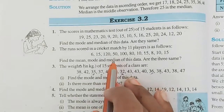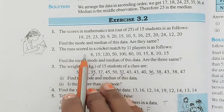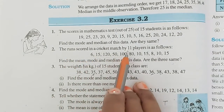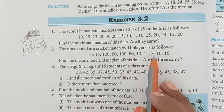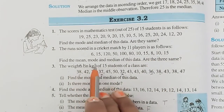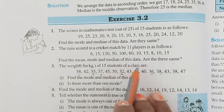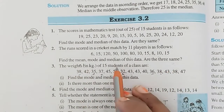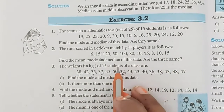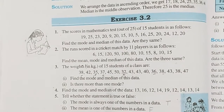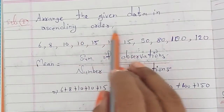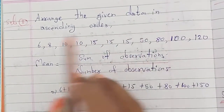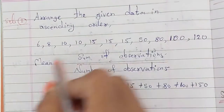Question 2: The runs scored in a cricket match by 11 players are given. Find the mean, median, and mode. Then check whether all three are the same. First, write the data in ascending order — small to big.